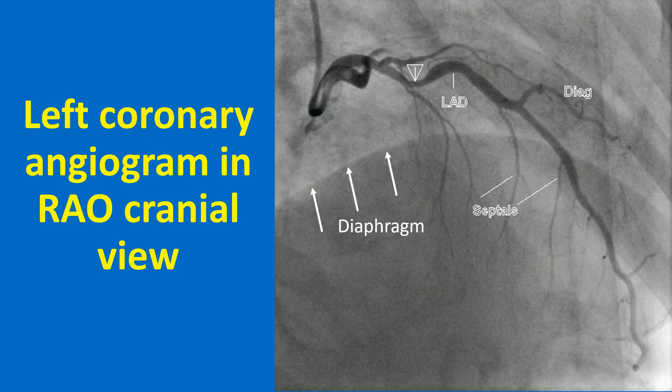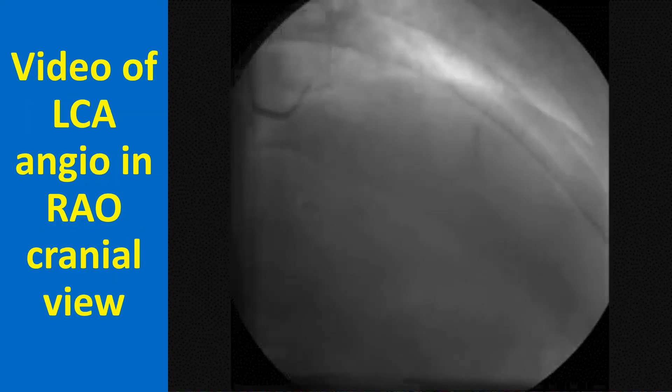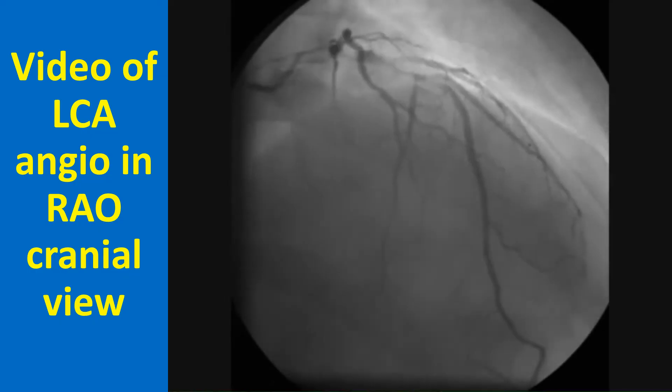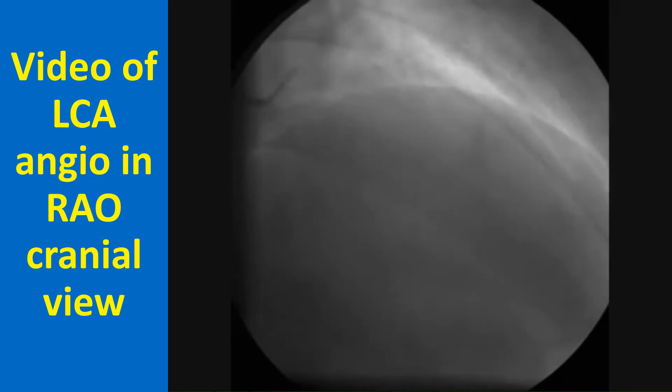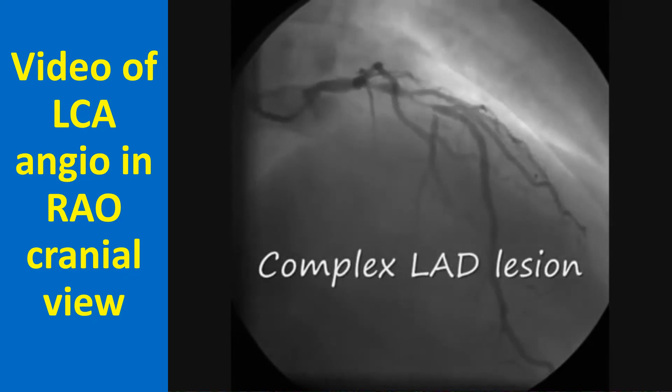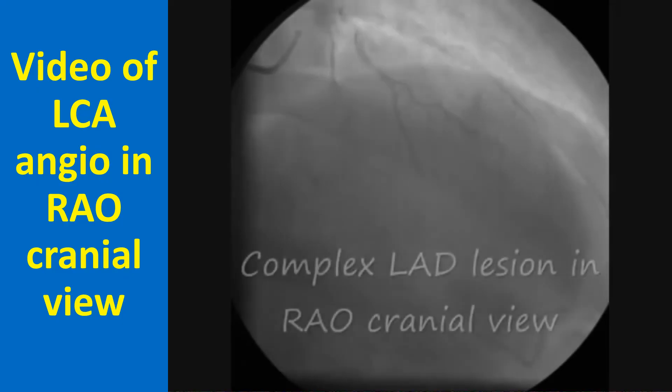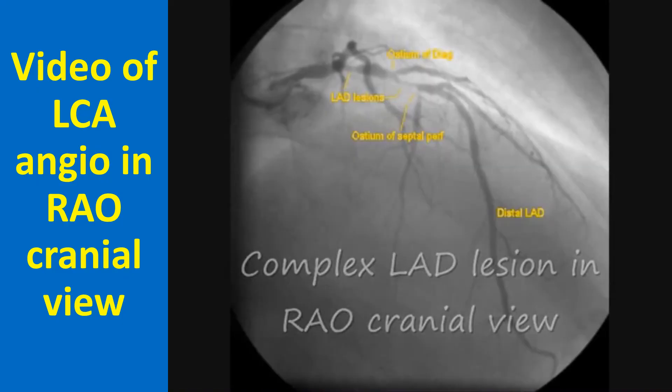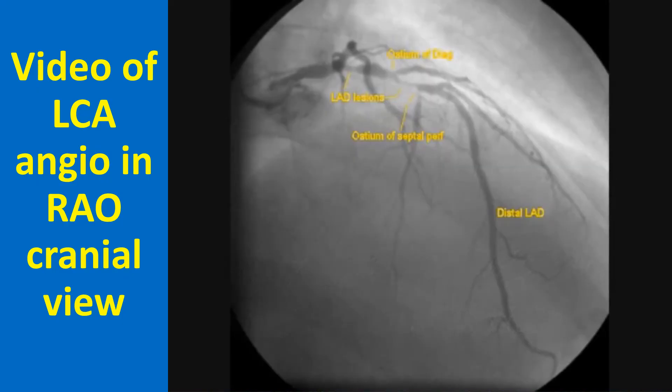Rightward angulation in RAO cranial view is useful in reducing overlap of the proximal LAD by the vertebral spine and the catheter. It may be noted that in both cranial views the diaphragmatic shadow goes high up into the field. A video of the left coronary angiogram in RAO cranial view shows a complex lesion in the LAD, with the LAD seen wrapping around the apex — a Type 3 LAD.